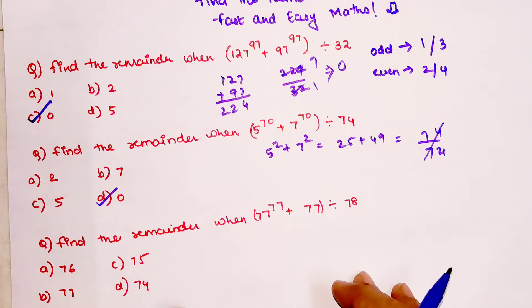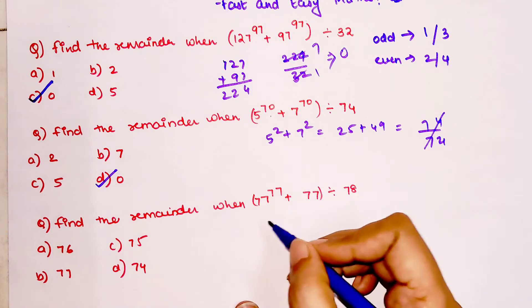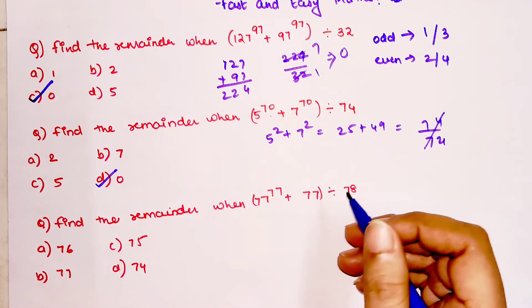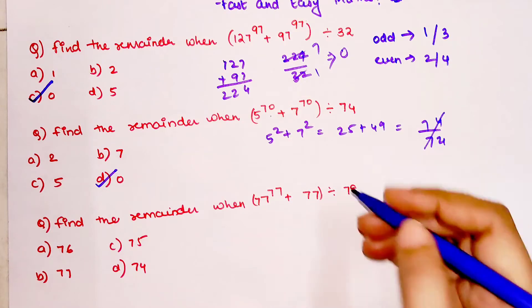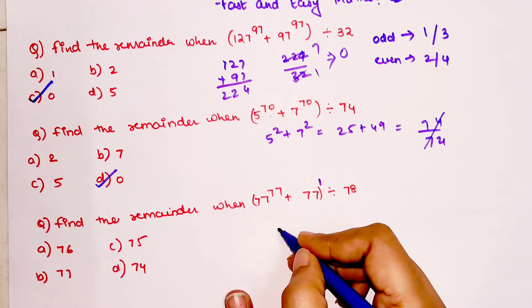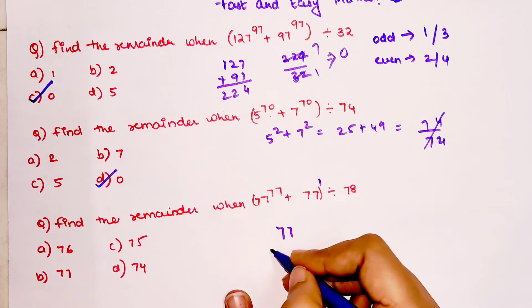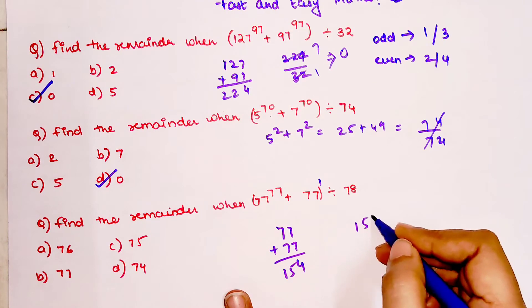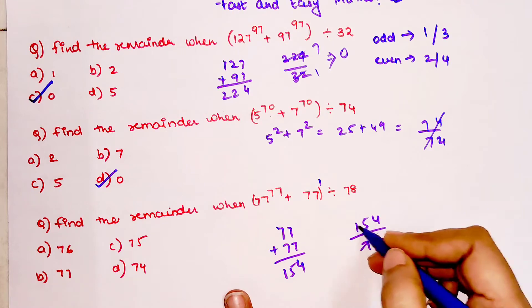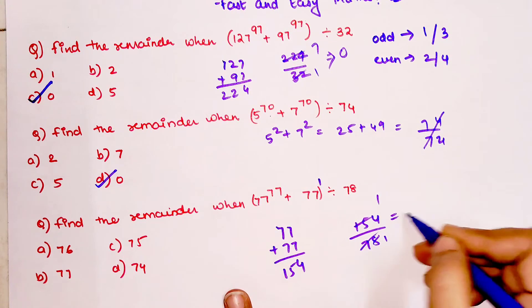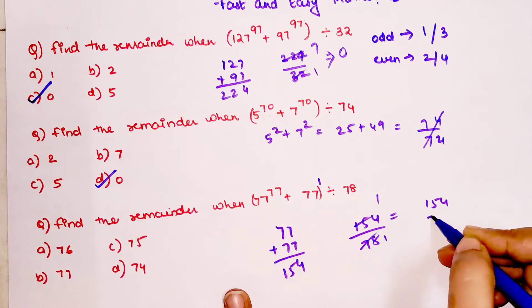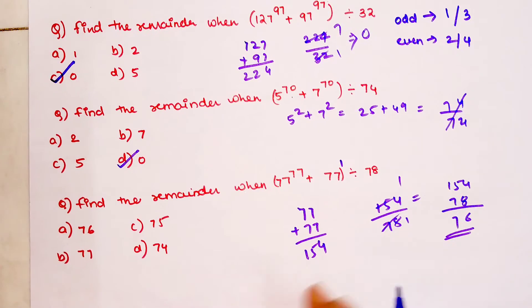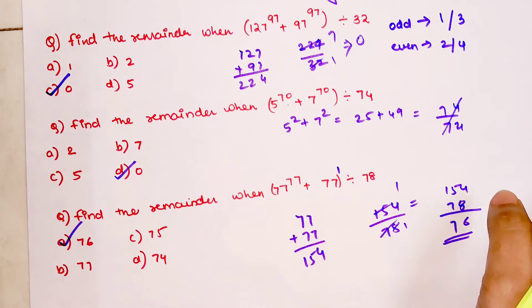Now we have 77 raised to 77 and this is 77. See, understand here we don't have 77 raised to anything, so obviously it is raised to 1. So this will be what? Again, we can make it raised to 1. So 77 plus 77 gets you 154. So 154 when divided by 78, this is going to be 1. You will have to subtract it, and when you subtract 154 by 78, you will have 76. So here, option A is my correct answer.